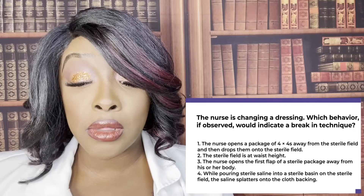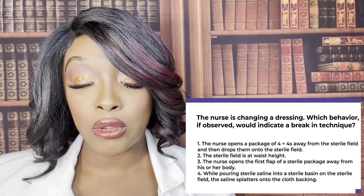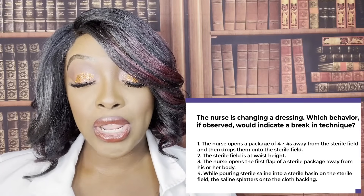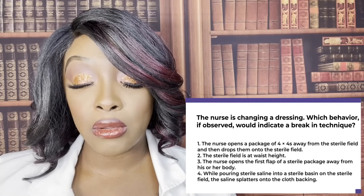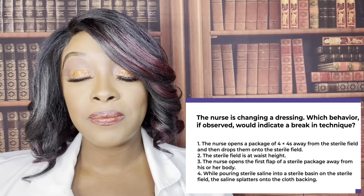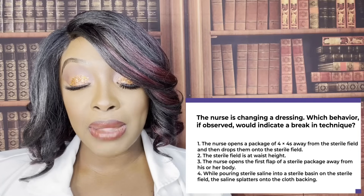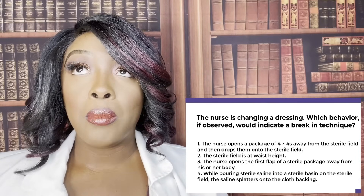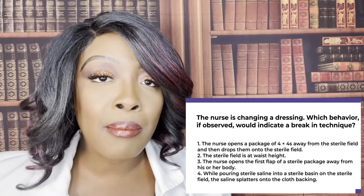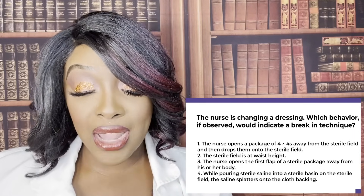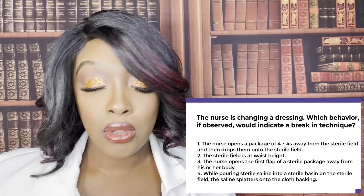The nurse is changing a dressing. Which behavior would indicate a break in sterile technique? One, the nurse opens a package of 4x4s away from the sterile field and drops them onto it. Two, the sterile field is at waist height. Three, the nurse opens the first flap of a sterile package away from the body. Or four, while pouring sterile saline into a sterile basin, the saline splatters onto the cloth backing. The correct answer is four — once the cloth backing gets wet, that fluid becomes a vehicle for bacteria and pathogens, breaking the sterile field.